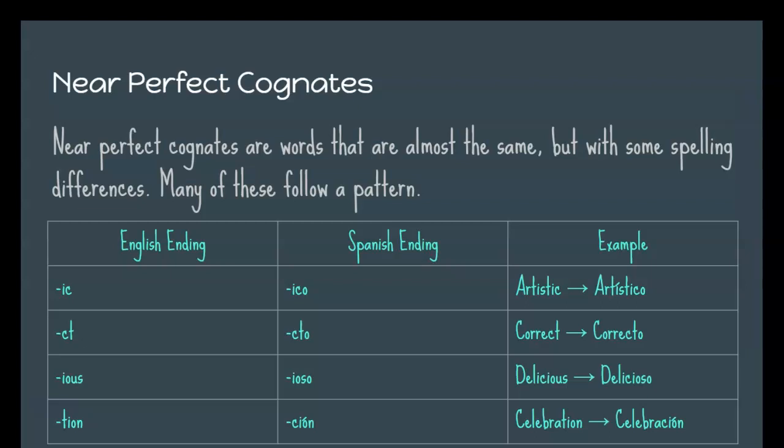If it ends in ct in English it would have the cto Spanish ending, so correct in English would be correcto in Spanish. If it has the ious ending in English it would have ioso in Spanish, so delicious becomes delicioso. And if it has the tion ending in English it would have the cion ending in Spanish, so celebration becomes celebración.